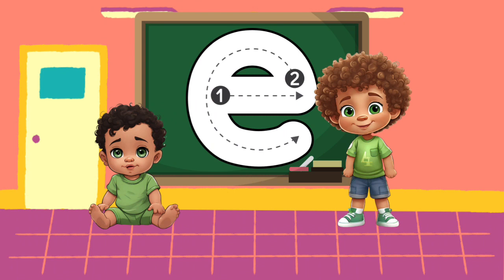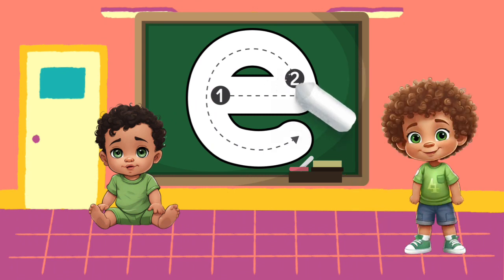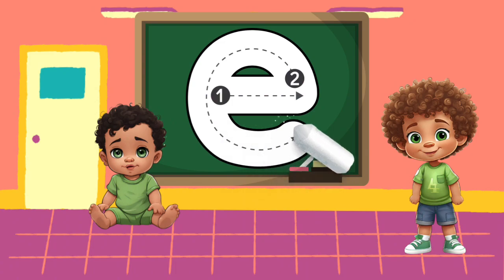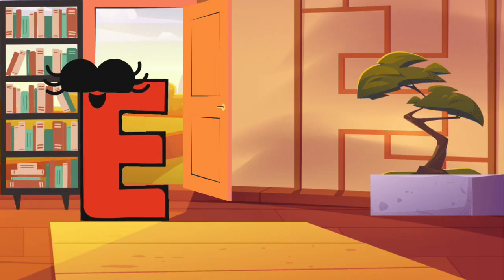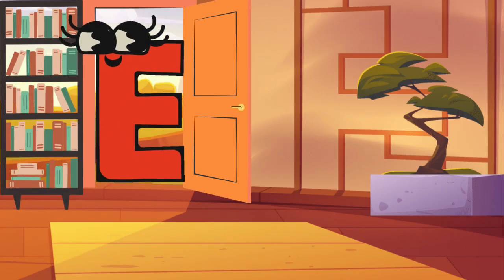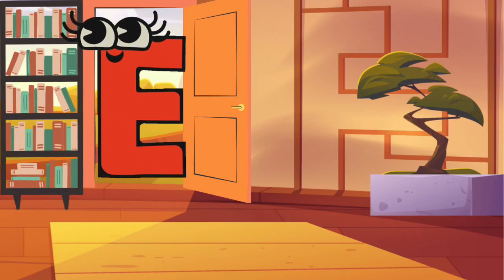Let's make the lowercase e. Draw a line across and then make a C. That's it for the letter E. It's time for E to exit.